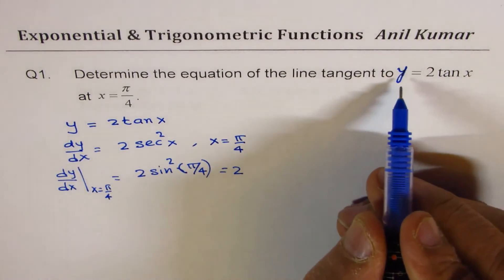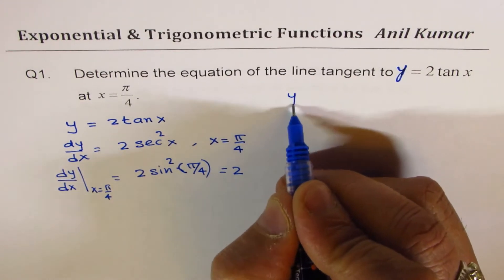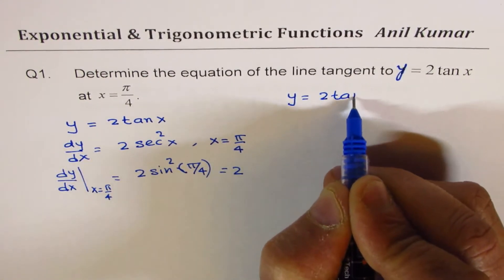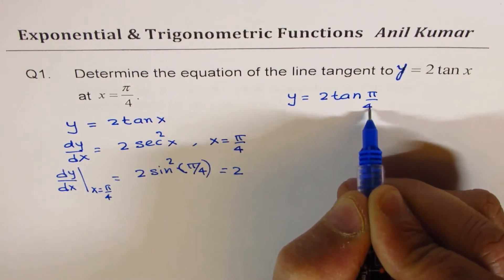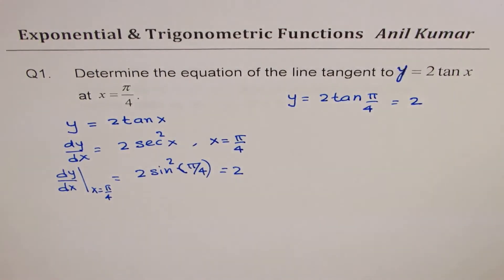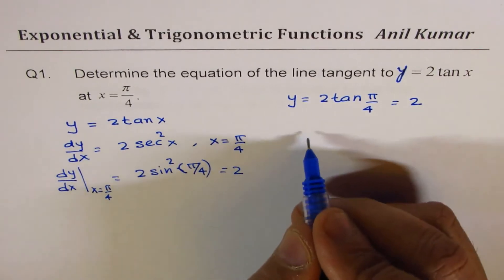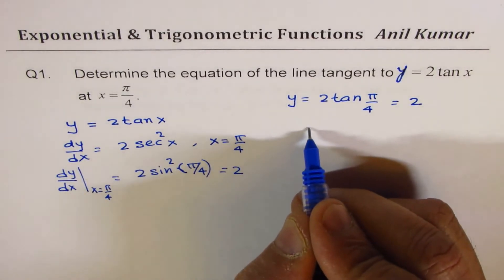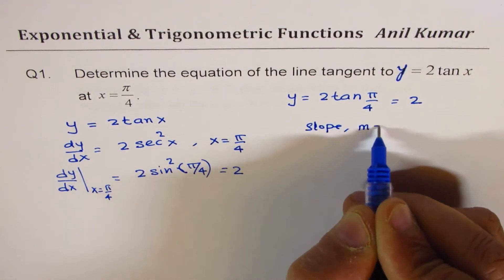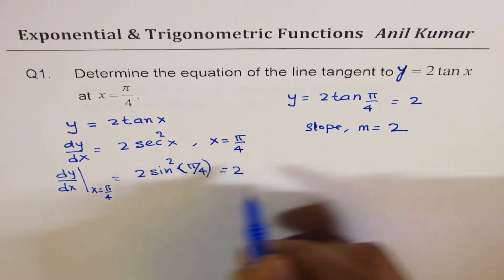Let us also find the value of the function at x equals pi by 4. So y equals 2 tan(pi by 4), which is 2, since tan(pi by 4) is 1.